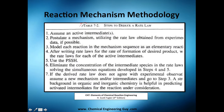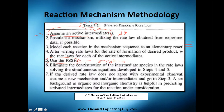Here's a small summary of the methodology: assume an active intermediate, postulate a mechanism, and model each reaction — you need the intermediate reaction, the first reaction, and the final reaction. Then use the PSSH — the pseudo steady state hypothesis — which states that the net rate of change of the intermediate concentration is zero. Finally, eliminate the intermediate concentration and solve.